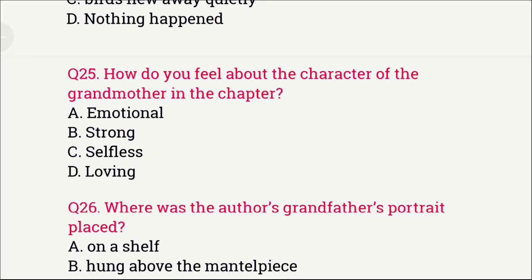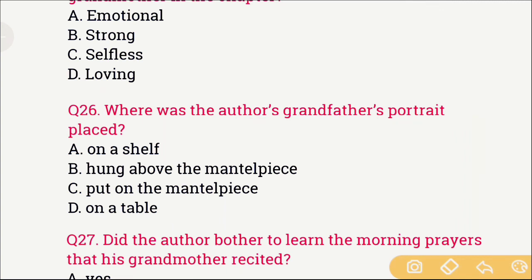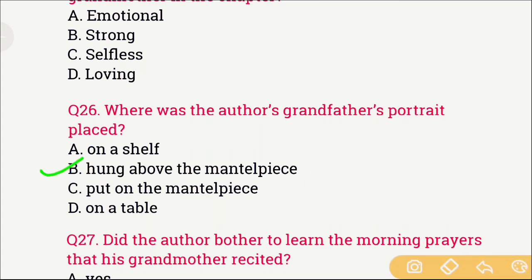Question number 26: Where was the author's grandfather's portrait placed? The options are: A) On the shelf, B) Hung above the mantelpiece, C) Put on the mantelpiece, and D) On a table. The right answer is option B — hung above the mantelpiece.